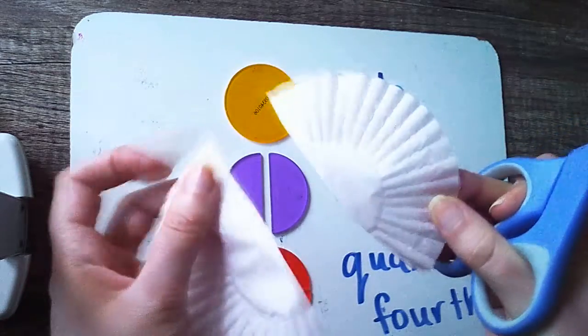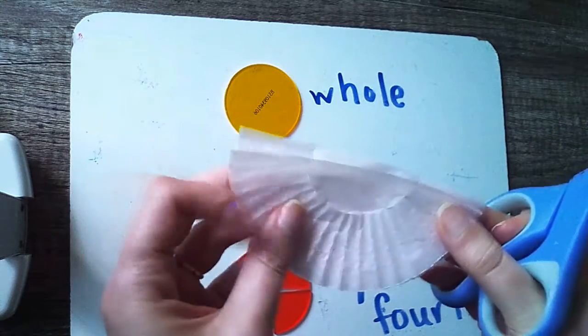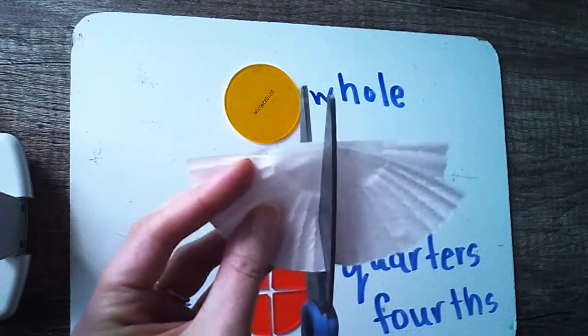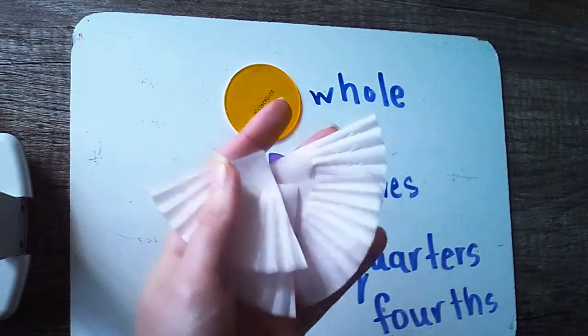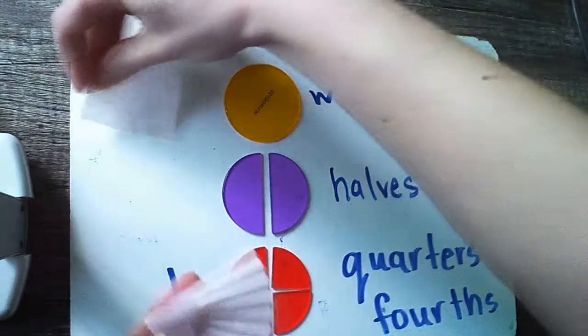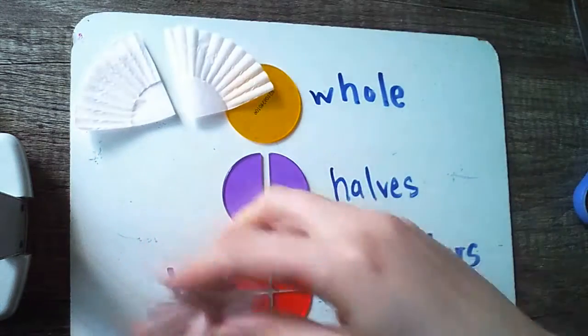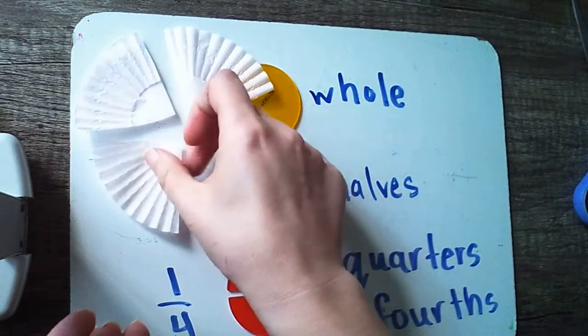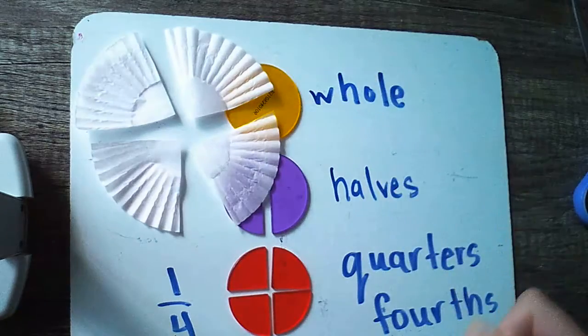Now I have halves. See how they're one on top of the other, exact same shape and size. Now I have quarters. These four quarters can get put together to make our whole.